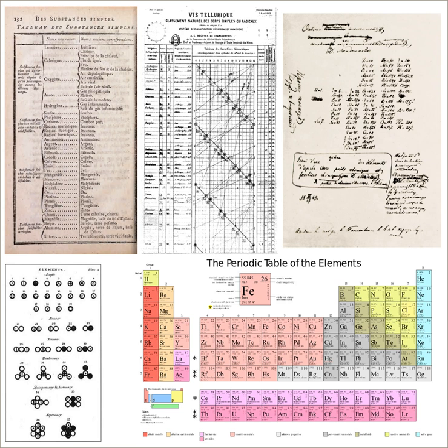Examples of triads include: chlorine, bromine, and iodine; calcium, strontium, and barium; sulfur, selenium, and tellurium; and lithium, sodium, and potassium.